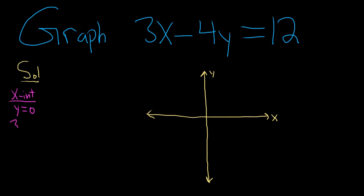That leaves us with 3x minus 4 times 0 equals 12. This is 3x minus, and 4 times 0 is just 0, and that's equal to 12. So 3x is equal to 12. Because x is being multiplied by 3, we'll divide both sides by 3.